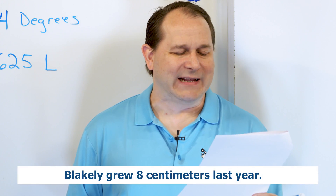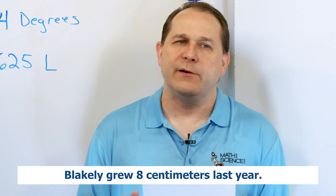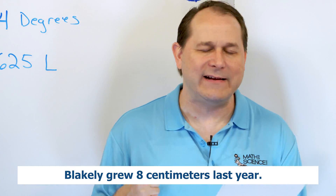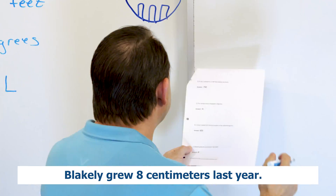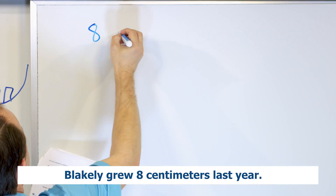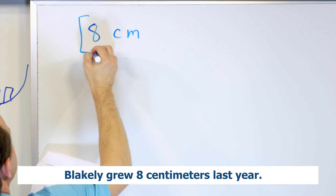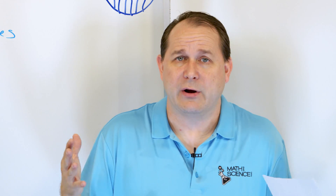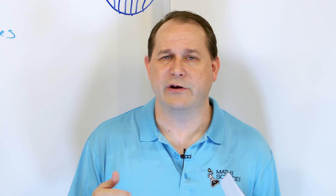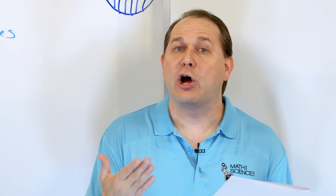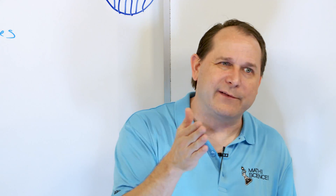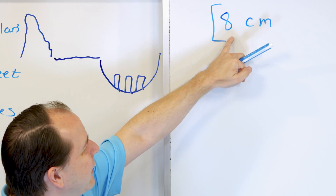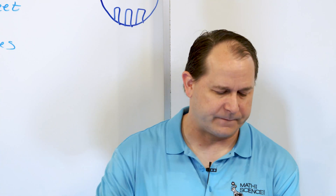Problem five: Blakely grew eight centimeters this year. When you're adding something, it's positive; when you're taking something away, it's negative. So if you grow eight centimeters, we're going to call it positive eight centimeters. Now, what if you shrink? When we get older, you can actually start to shrink in height — we would call that negative centimeters, like negative two or negative three centimeters. But here we're growing, which means we're getting bigger, and that means we treat it as a positive number.